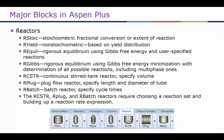To model reactors, there are again several choices in Aspen+. The first four — R-Stoic, R-Yield, R-Equilibrium, and R-Gibbs — are simple models where kinetics are not included. Whereas R-CSTR, R-Plug, and R-Batch require kinetic information.